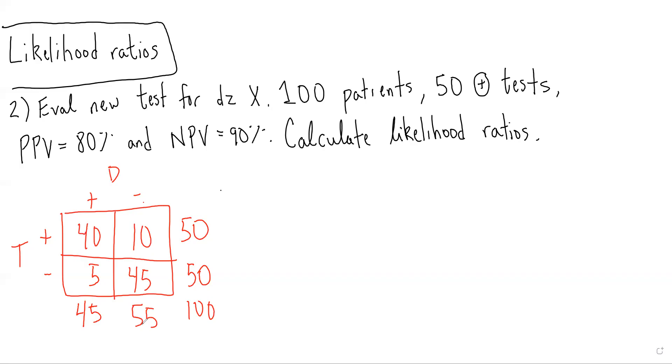To calculate the likelihood ratios, we need sensitivity and specificity. Sensitivity is the probability of a positive test given you have the disease, which is 40 over 45, or approximately 0.89.